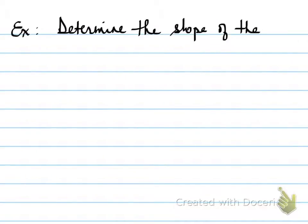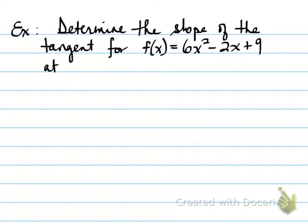Example, determine the slope of the tangent for f(x) = 6x² - 2x + 9 at x = -1. So, what we're trying to find is the slope of the tangent at that point. So, the instantaneous rate of change, and what we're going to use is -1 and -0.999 to determine the slope of the tangent.